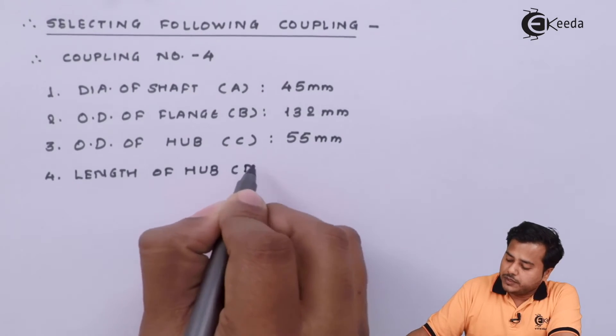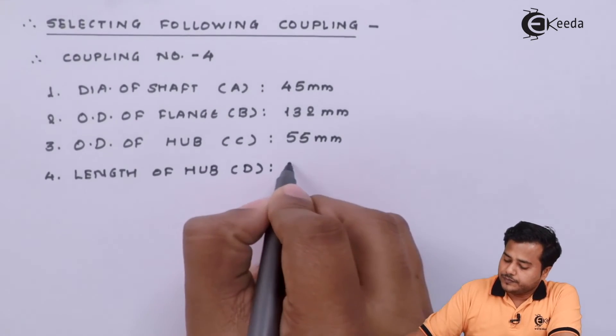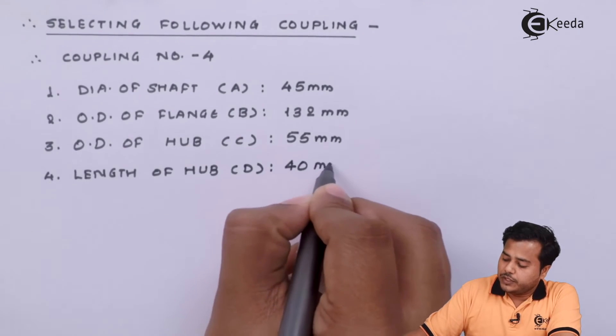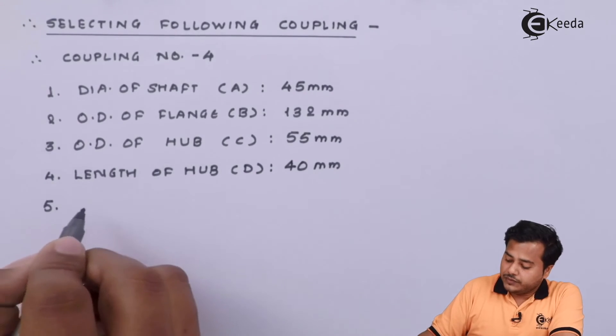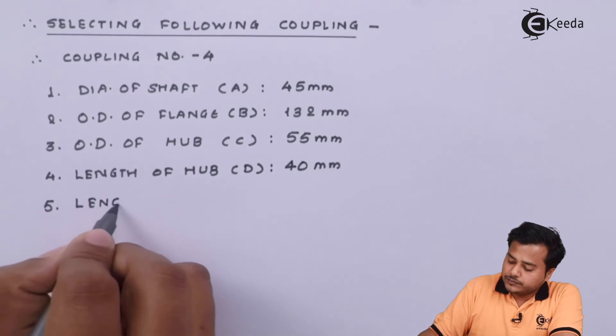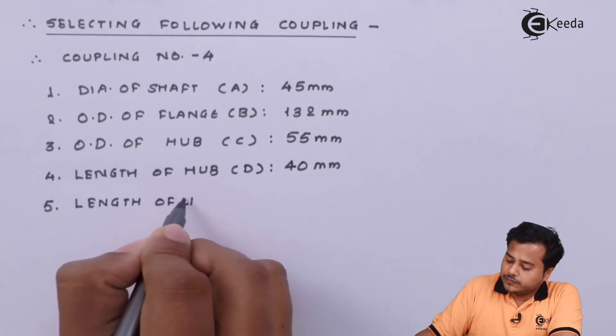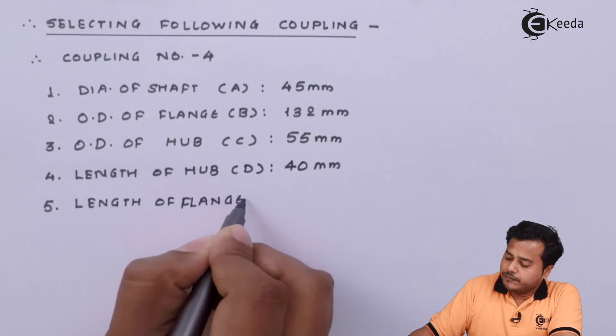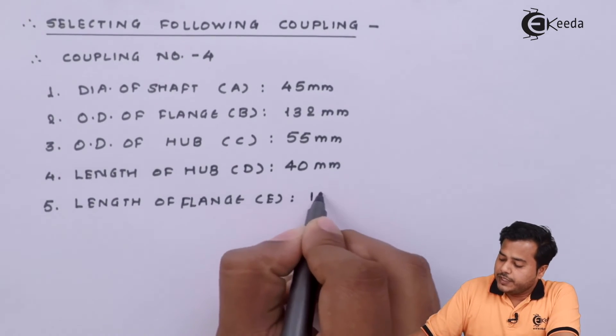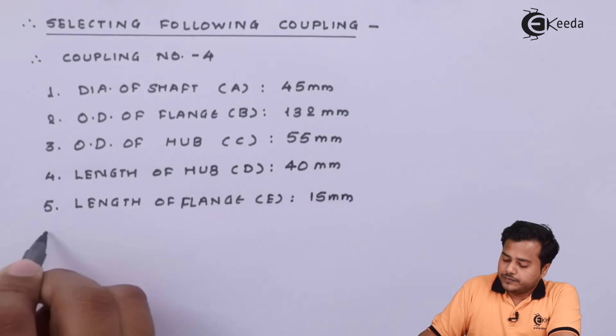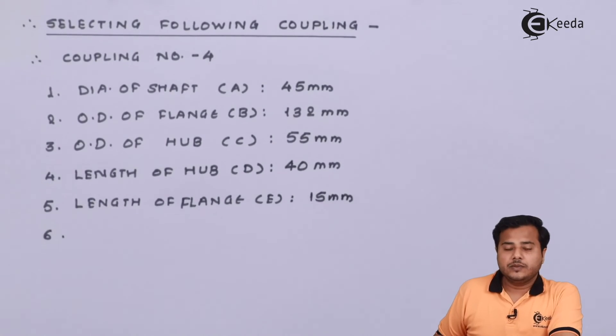The next one is nothing but length of hub. Let us call it parameter D. It comes out to be 40 millimeter. The next parameter is the length of flange. Let us call it parameter E. It comes out to be 15 millimeter. And the last one is the protected length of the flange, which is in our case 15 millimeter.